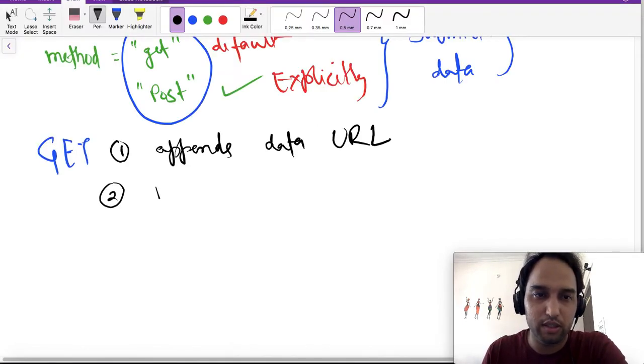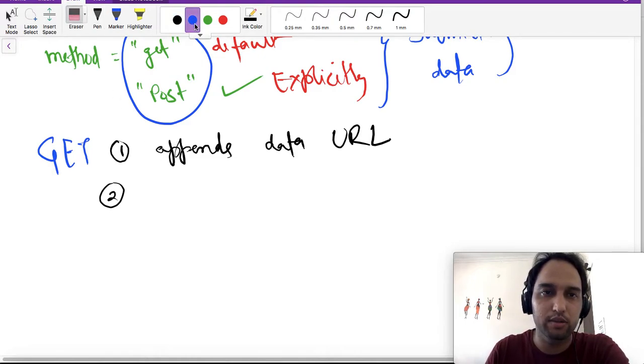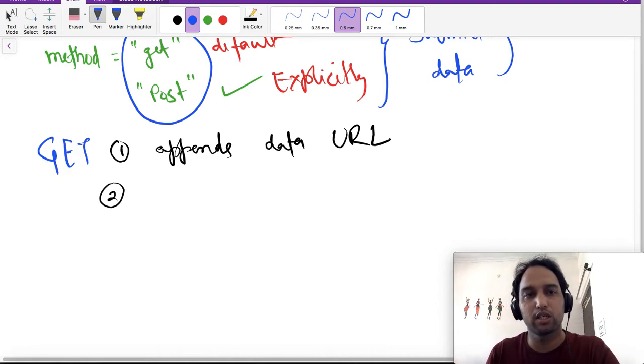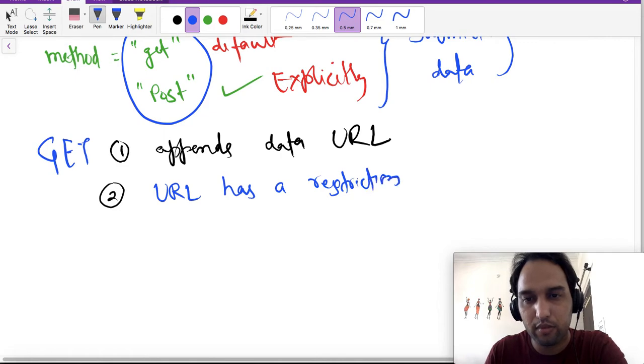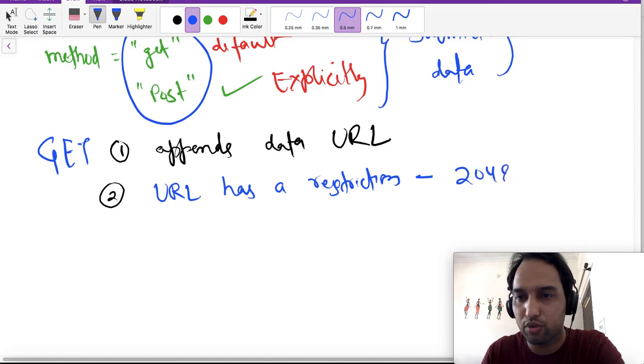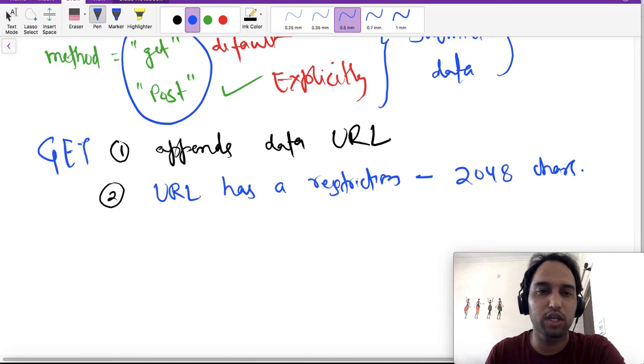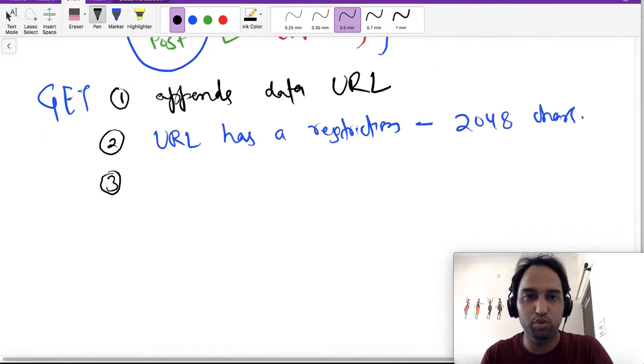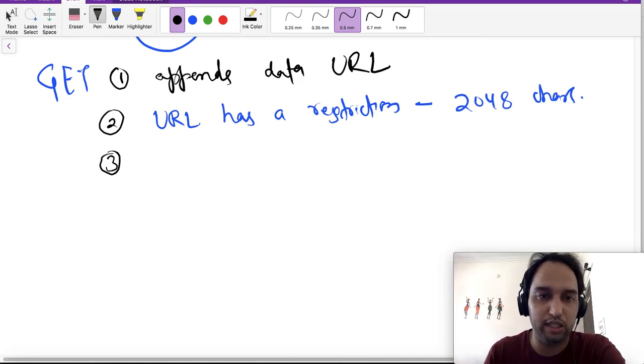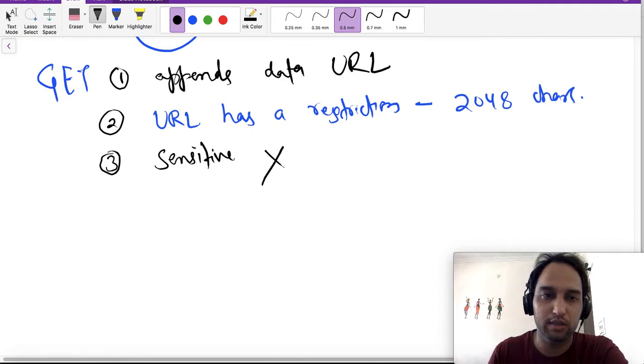Second, the data that is appended to URL has some restriction to it because URL has a restriction in length. URL could have 2048 characters, so you can't send much data. Third point: as the data you are seeing is exposed to anyone on the network or while you are sending the data, if you want to send sensitive information, GET method is not for that. So for sending sensitive data you need to use POST method.